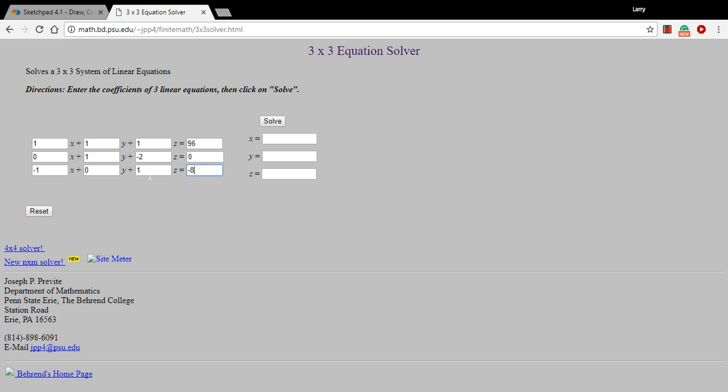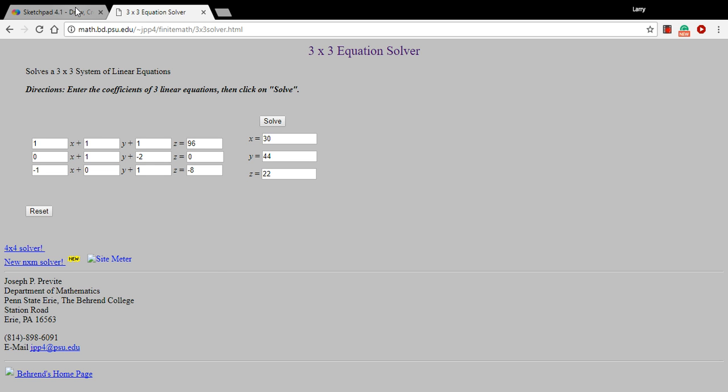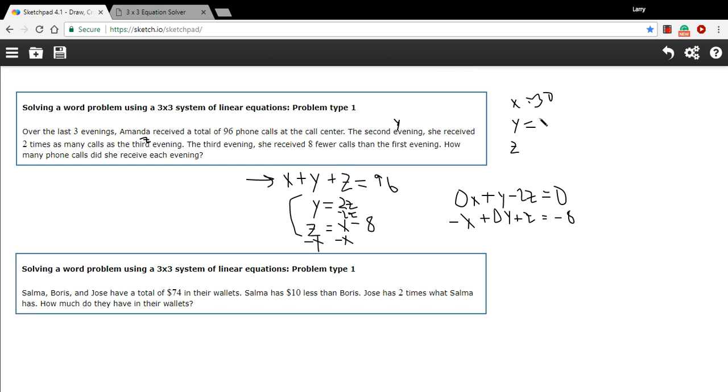All right. Assuming that I've typed all those incorrectly, I can just hit solve here. And we get 30, 44, and 22. And those do add up to 96, so that seems to work. We could go back and check some of the other things. But that looks like it's going to be right. So X is 30, Y is 44, and Z is 22.